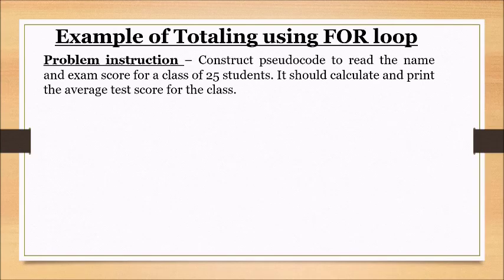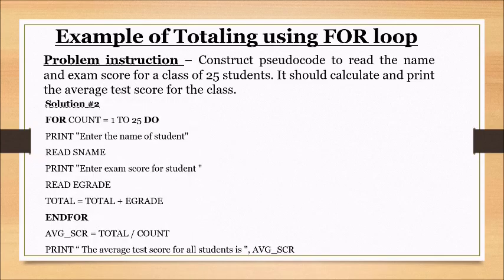Example of totaling using a for loop: the following problem statement requires a pseudocode to read the name and exam score for a class of 25 students. The algorithm should then calculate and display the average test score for the class. The solution shows the for loop header, which contains the for keyword, the counter variable, and the total number of times the loop will be executed.